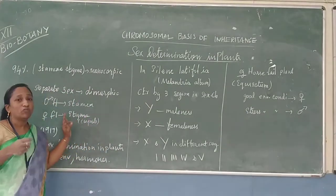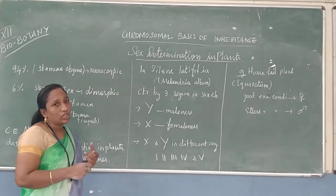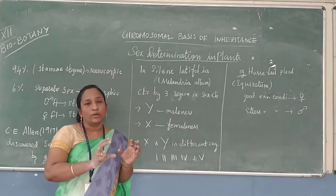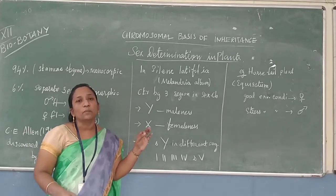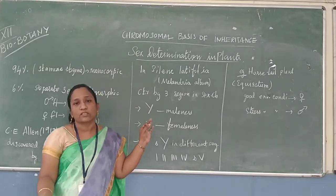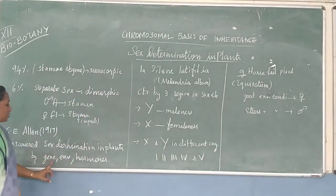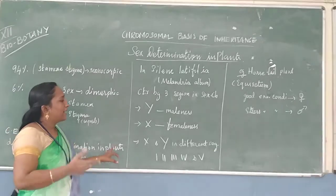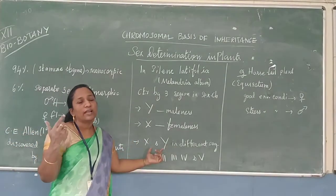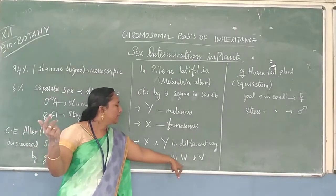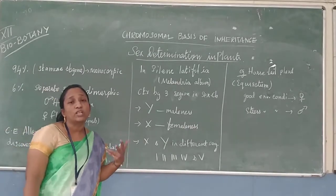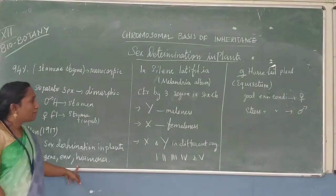So the sex determination introduction tells us that — like Bonellia in animals, where sex is determined by whether the larva attaches to the parent or not — in plants also three factors control the sexes: genes, hormones, and environment. For example, Silene latifolia expresses male and female class based on the presence of genes in different segments — segment 1, 2, 3, 4, and 5 — as discovered by C.E. Allen in 1970.